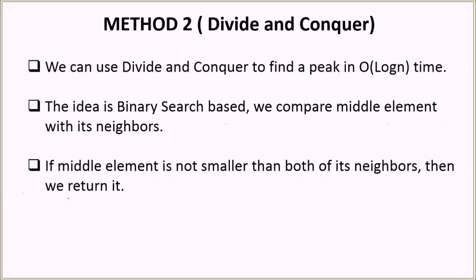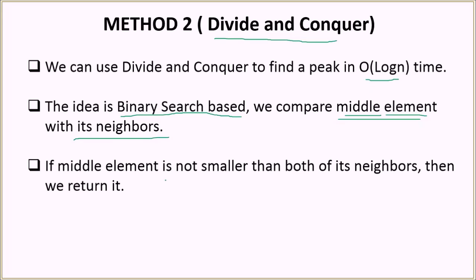We can actually find a peak element in better than O(n) time. The method we will use is divide and conquer. Using this paradigm, we can find the peak in O(log n) time. The idea is basically binary search based — we compare the middle element with its neighbors. If the middle element is not smaller than its neighbors, we return it because we have found the peak element in the first iteration itself.